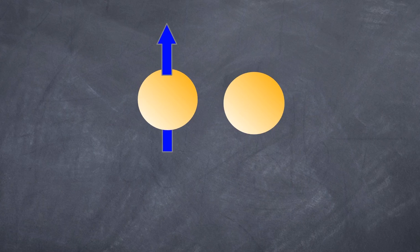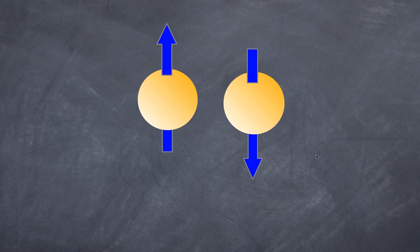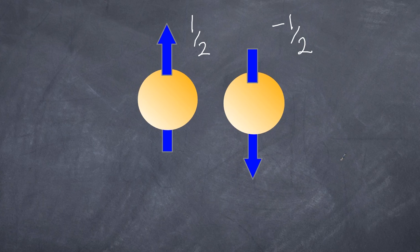What about neutrons? Neutrons, as you know, have no charge. But this actually shows you how spin isn't literally a correct term — because neutrons have spin too. We can have a neutron with spin up and a neutron with spin down. This cannot be explained by imagining the neutron as a spinning charge. Nonetheless, protons and neutrons both have the property called spin — either spin up or spin down — with values of positive one-half and negative one-half respectively.